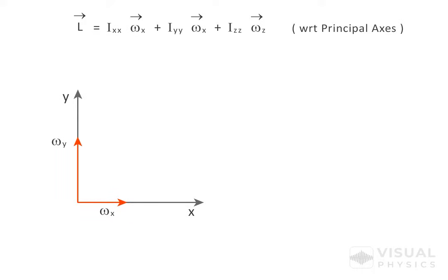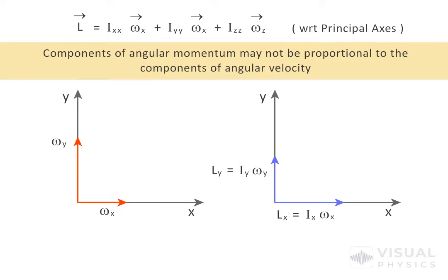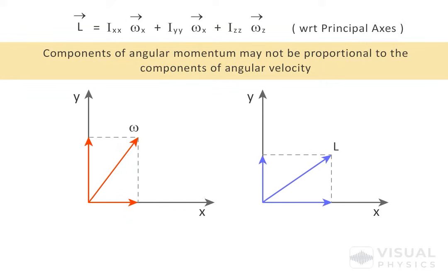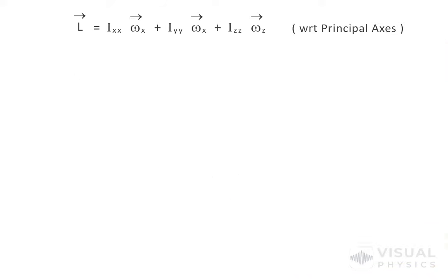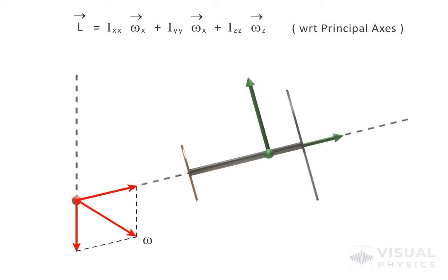Also note that if we look at this equation, then depending on the value of moment of inertia along each axis, the components of angular momentum may not be proportional to the components of angular velocity. So the resultant angular momentum may not be along the direction of the resultant angular velocity. Therefore, we cannot find the resultant angular velocity and then use this equation to find the net angular momentum, because that approach would imply that the resultant angular momentum must be along the direction of the resultant angular velocity, which we have seen is not the case.